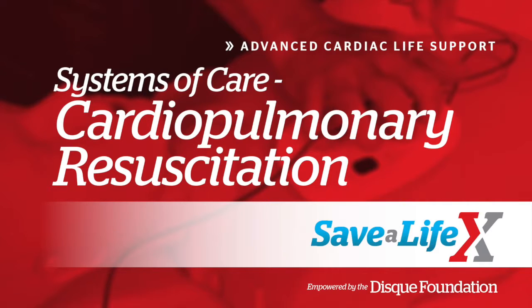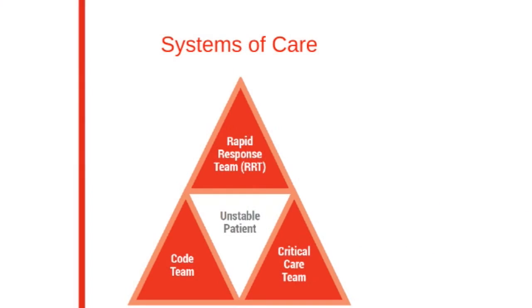In our next lesson, we will be discussing the systems of care for cardiopulmonary resuscitation. The systems of care involves the Rapid Response Team, or RRT, Critical Care Team, and the Code Team, all upholding the unstable patient.